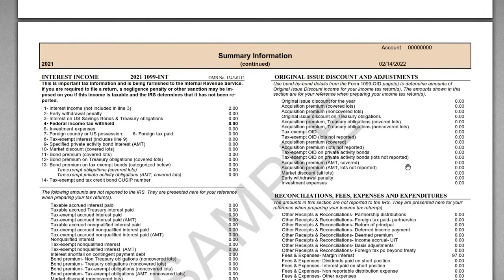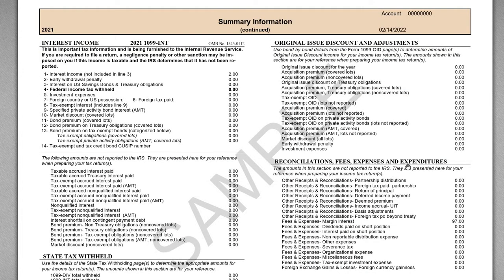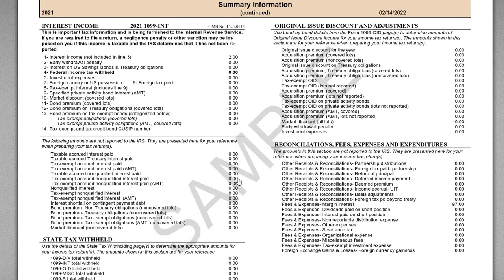Scrolling down to the second page, we've got some more information. We can see he had some interest income earned on the account, and then down here is where we find our interest expense. Among the fees and expenses line items, you can see margin interest. The margin interest charged on the account was $97 for the year. This is going to be our investment interest expense number for the period. How much of that is actually going to be deductible — we'll get into that.